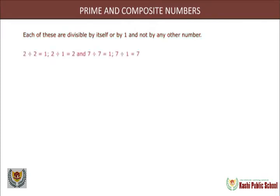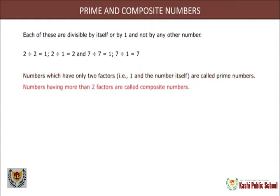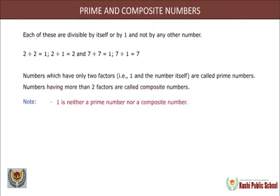Each of these numbers is divisible only by itself or by one. For example, 2÷2=1, 2÷1=2, and 7÷7=1, 7÷1=7. Numbers which have only two factors — that is, one and the number itself — are called prime numbers. Numbers having more than two factors are called composite numbers. Note: one is neither a prime number nor a composite number; all even numbers except two are composite numbers.